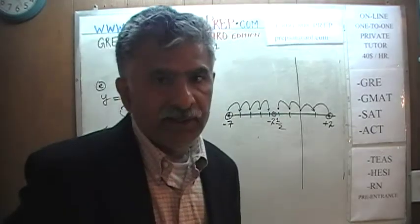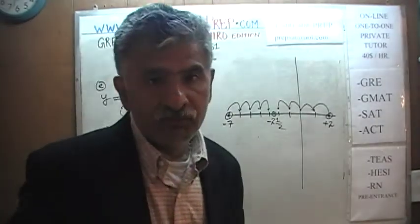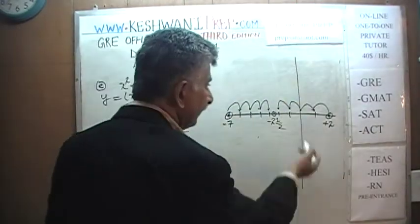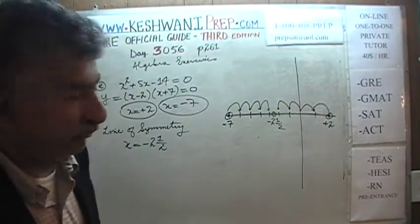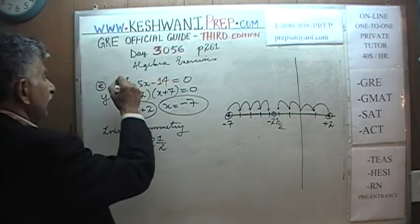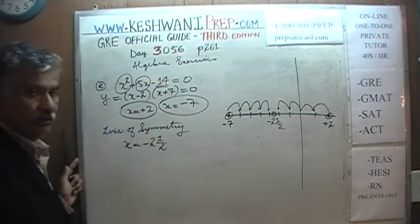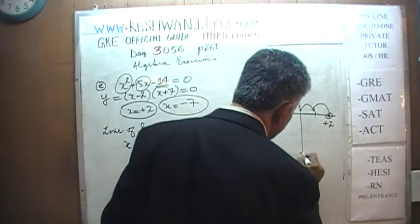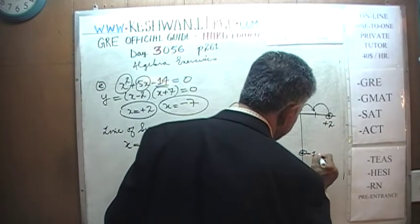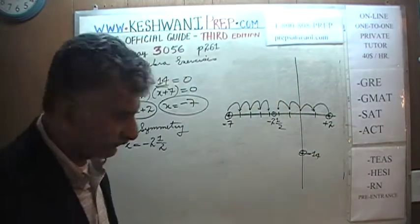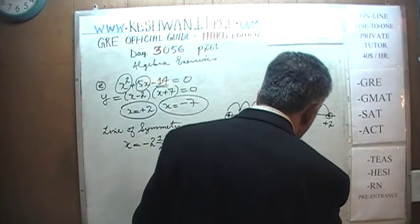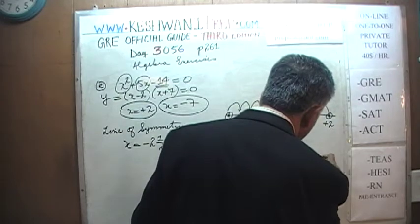They can also ask for the x-intercepts, which are positive 2 and negative 7, or the y-intercept. The y-intercept is where x equals 0. Substituting x = 0 into the equation, the x-terms drop out and we're left with negative 14. So the y-intercept coordinates are (0, negative 14).